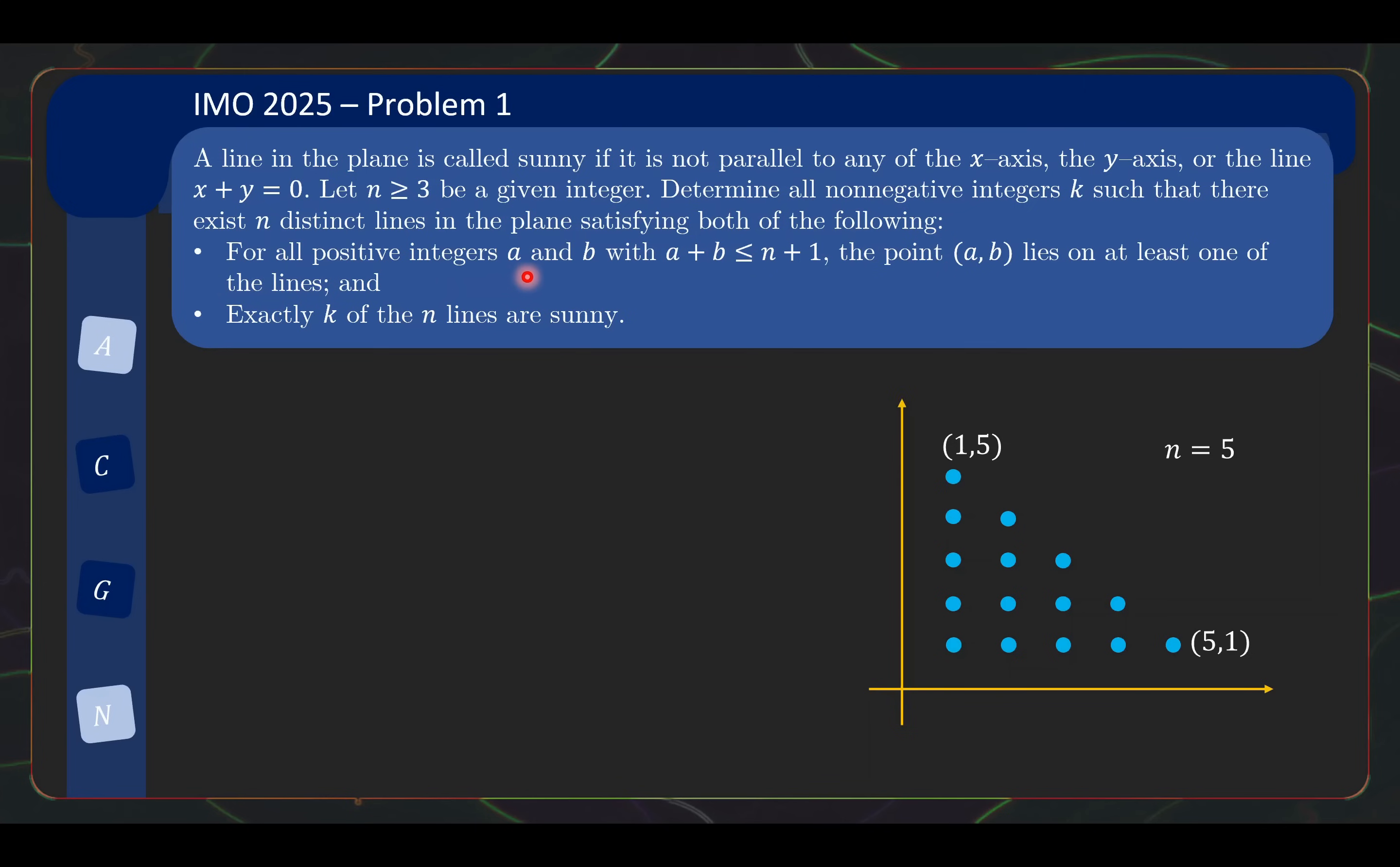For all positive integers a and b with a plus b less than or equal to n plus 1. If you are like me, after reading the problem the first time, I understood absolutely nothing. So do not worry if you are feeling the same. Let's digest the problem statement a little first.